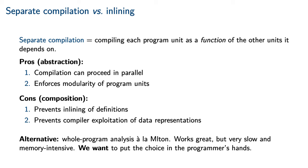Separate compilation also has some problems, especially in regard to composition. First, it can impede the inlining of definitions, which can prevent the compiler from exploiting implementation details. For instance, if the compiler knows how a given piece of code is going to be used, it may be able to generate more efficient code. The main alternative is whole program analysis in the style of the Milton compiler for Standard ML. This works great, but it is very slow and takes a lot of memory. We would like to put the choice in the programmer's hands as to when and where abstractions get broken for the sake of efficiency.